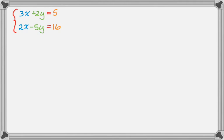So here's a system of equations: 3x plus 2y equals 5, and 2x minus 5y equals 16. So you might already know a bunch of ways to solve this system, and that's fine, but this is a different way.